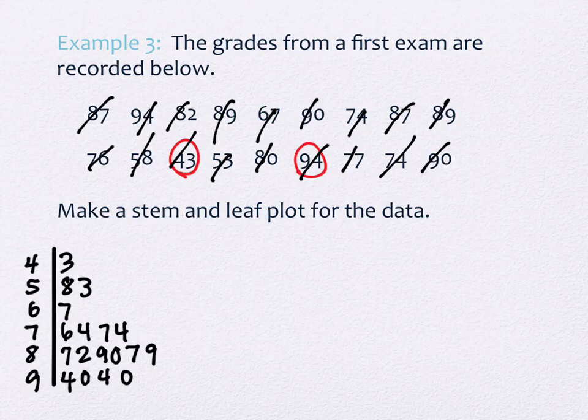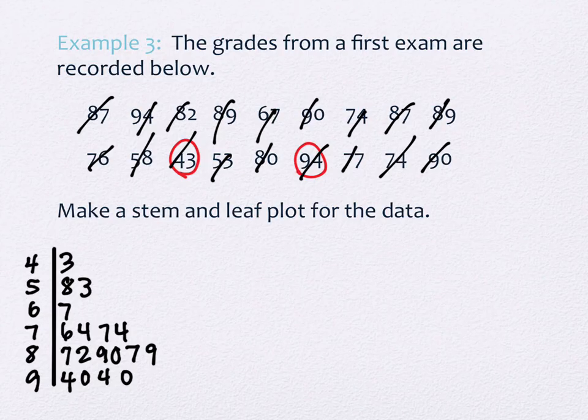It's a good idea to count your leaves and make sure you didn't skip one accidentally. Counting: 1, 2, 3... up to 18. Are there 18 up there? Yes. We didn't miss any on this one, but it has happened that people miss values because you're just moving through things quickly.